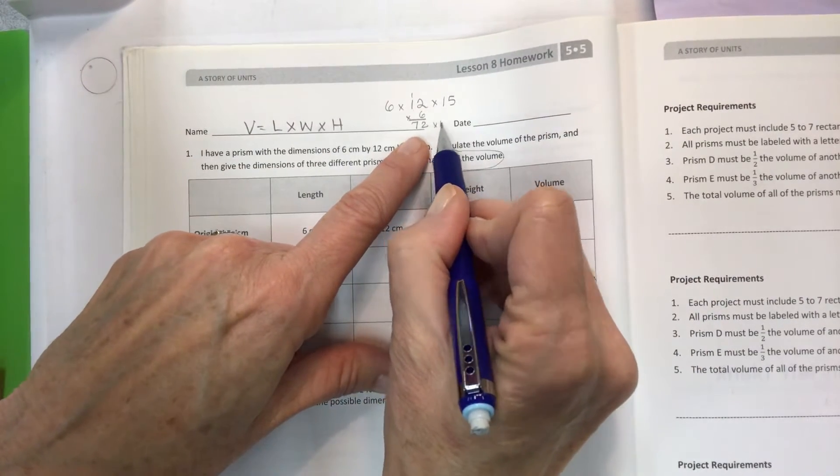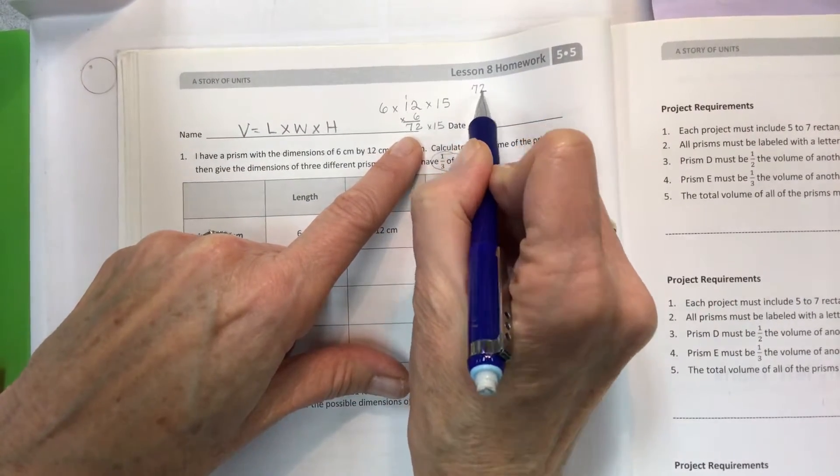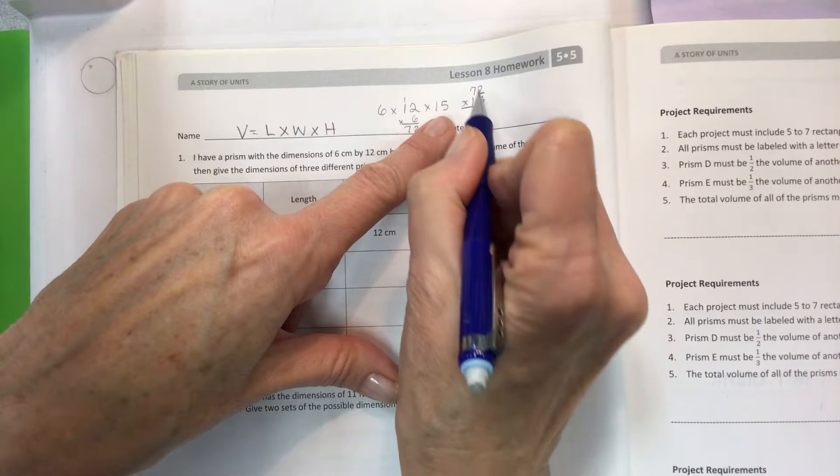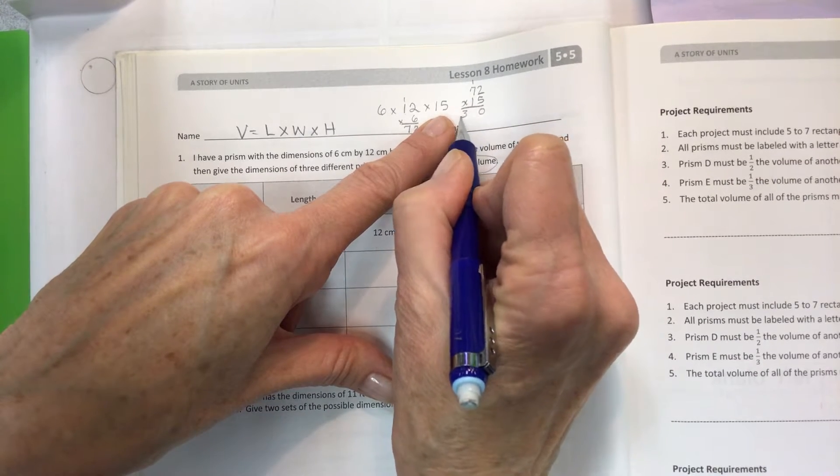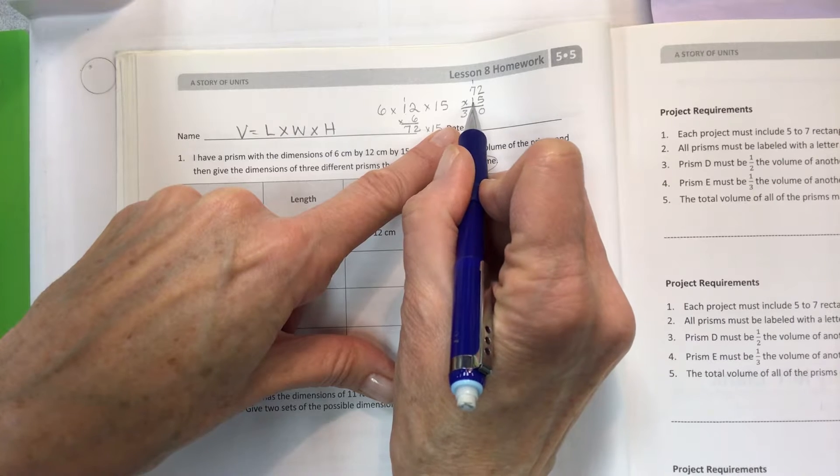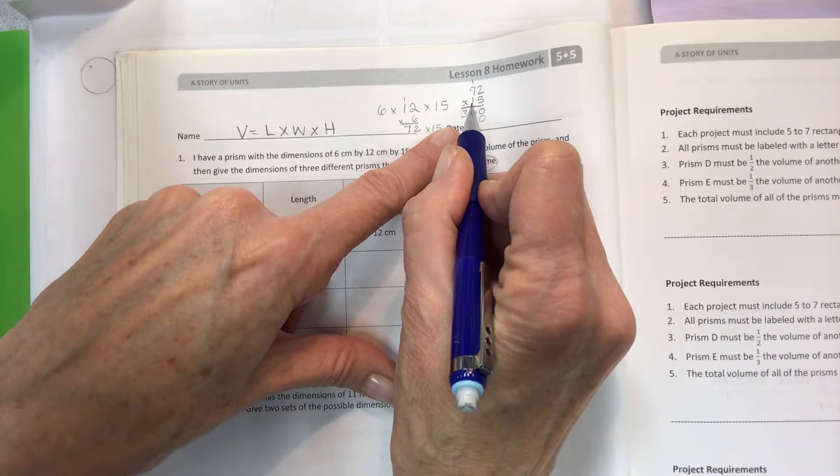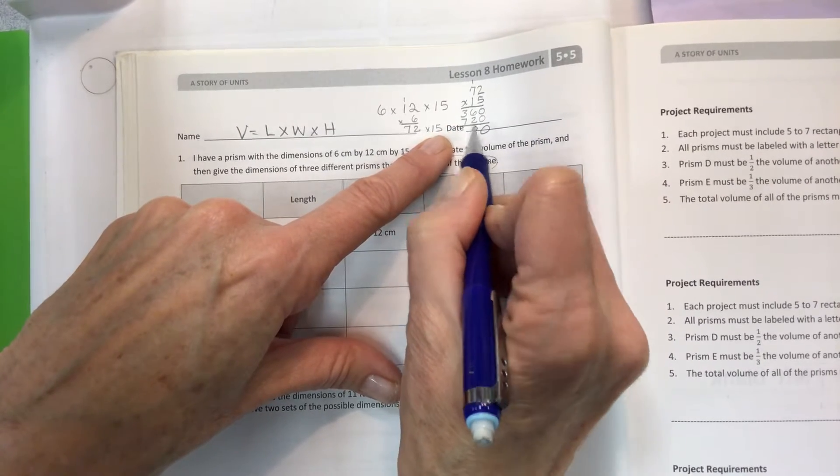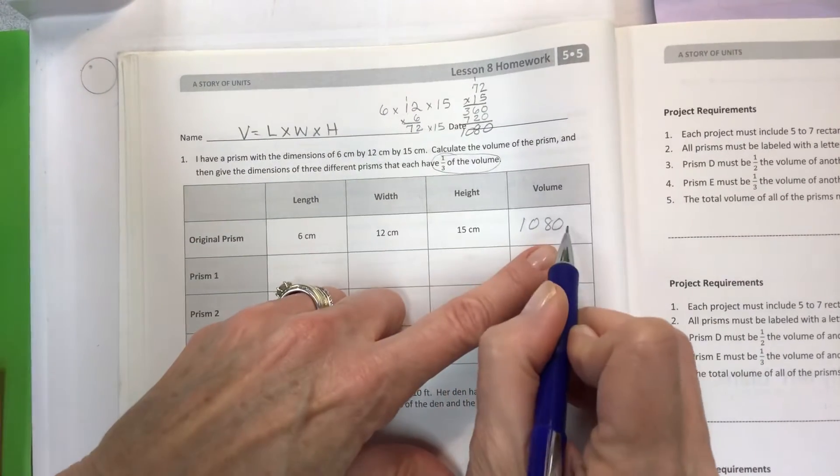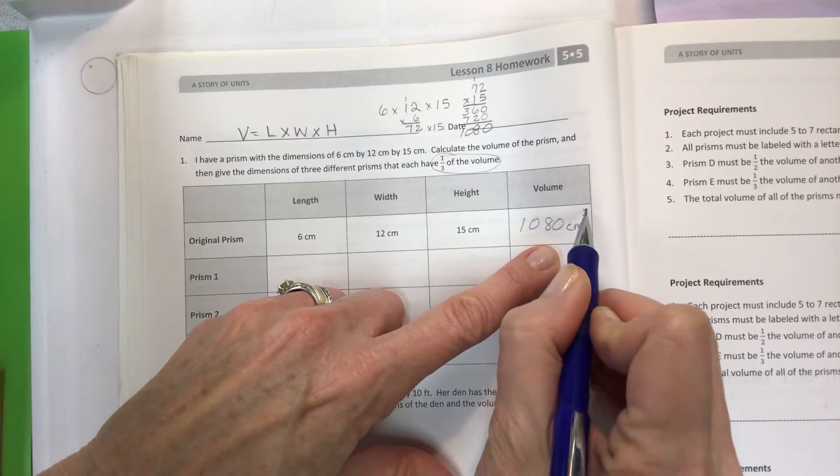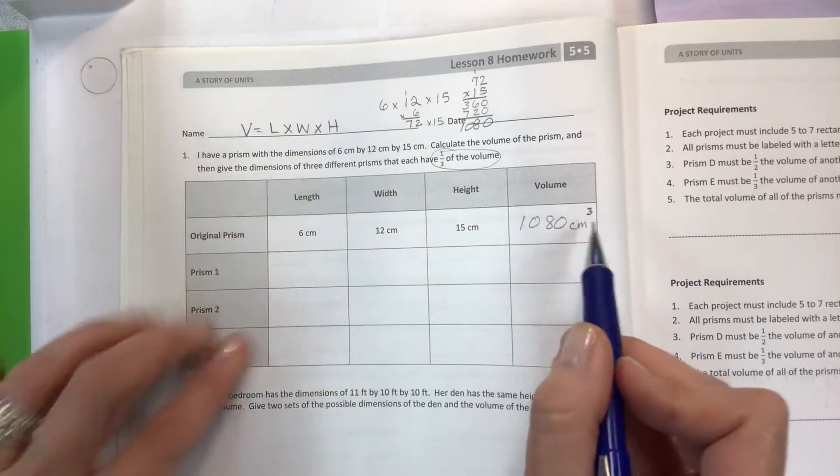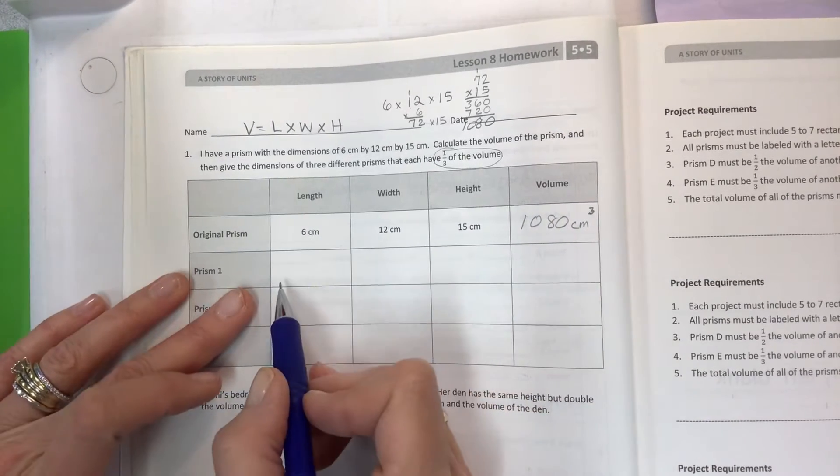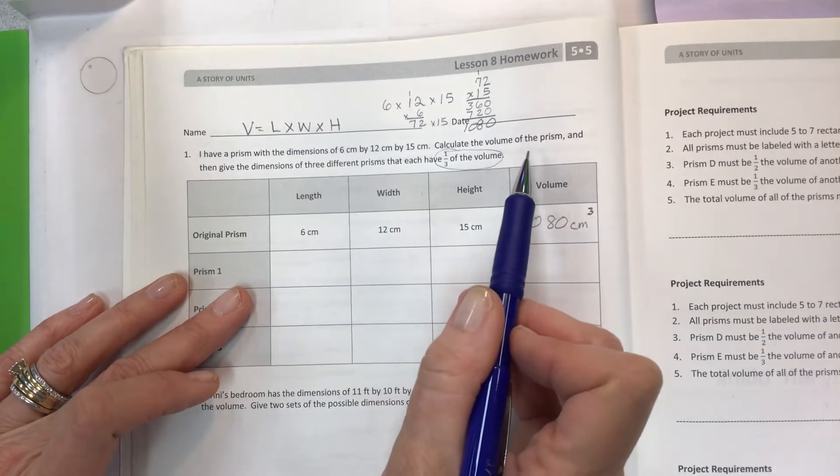Our next: 72 times 15, and set that up any place you have room. 5 times 2 is 10, 5 times 7 is 35 and 1 is 36. Then we multiply with 1, or it's really 10 because it's in the tens place, hold that 0, and here we go with 1: 1 times 2, 1 times 7, add those, we have 0, 8, and 10. So we have 1080 centimeters cubed. Remember it's 3 dimensions, put a 3 up there for your exponent.